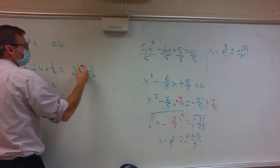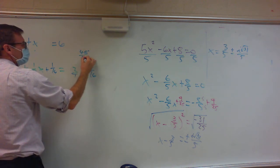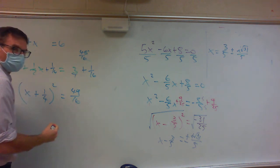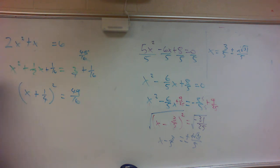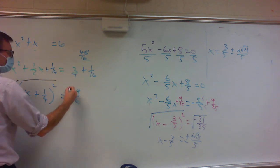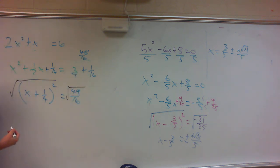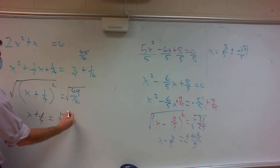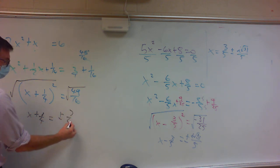3 over 1 is the same as 48 over 16. So that gives me 49 over 16. Take the square root of both sides: x plus 1 fourth equals plus or minus the square root of 49 over 16, and the square root of 49 over 16 is 7 over 4.